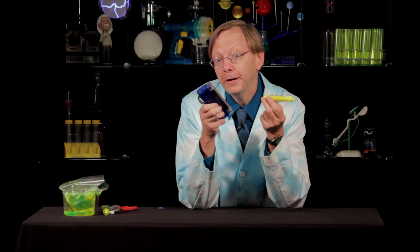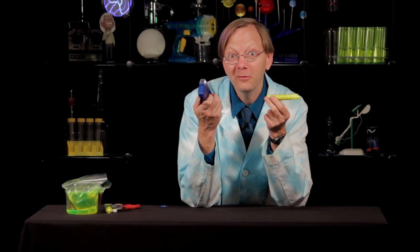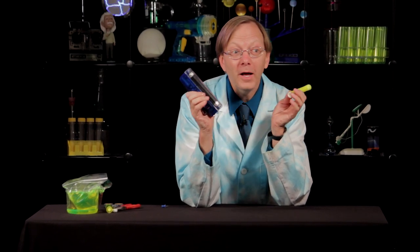All right there you go, how to make a tracking system with a fluorescent highlighter and a handheld black light. Pretty amazing. We got a lot more projects here at nickandtesla.com so check back often. Until next time, I'm Science Bob for nickandtesla.com.